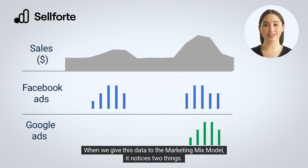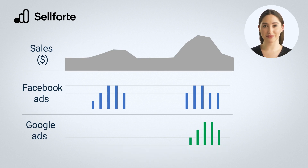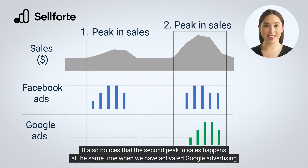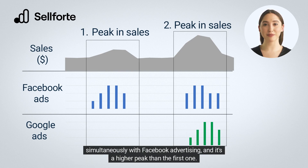When we give this data to the marketing mix model, it notices two things. Firstly, there's a peak in sales at the same time when we have conducted advertising in Facebook. It also notices that the second peak in sales happens at the same time when we have activated Google advertising simultaneously with Facebook advertising, and it's a higher peak than the first one.